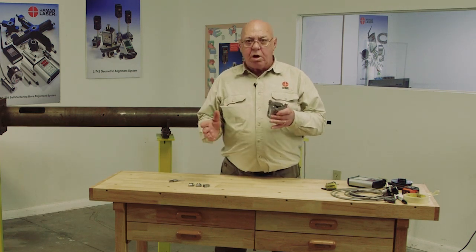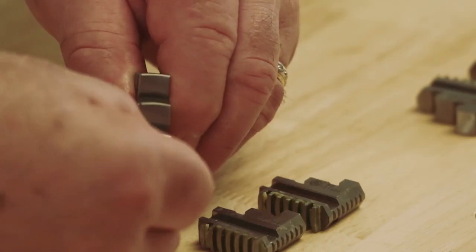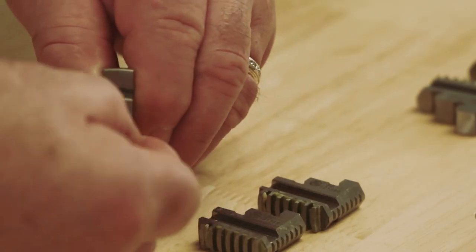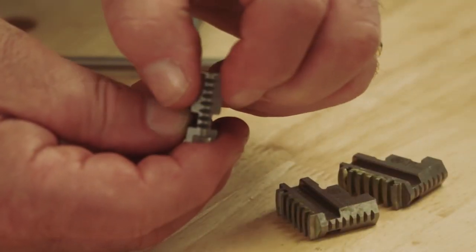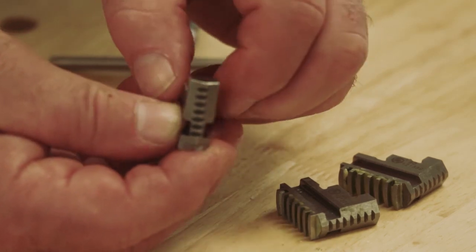These chucks come with two sets of jaws. The ID jaws, they're curved in this direction. They're kind of pointed here. They're tapered on each side.